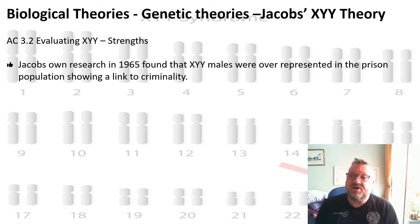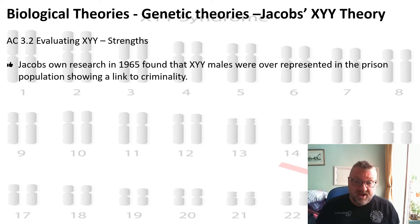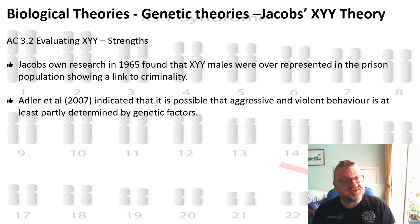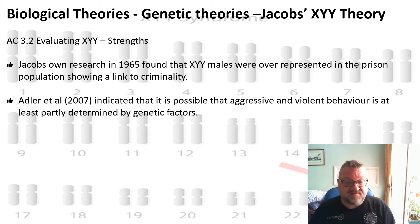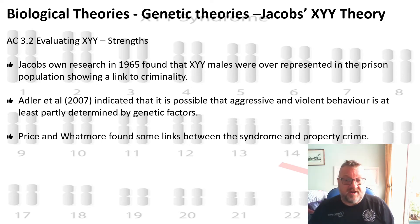Turning to evaluation, the strengths are that the 1965 research did find that XYY males were overrepresented in the prison population, showing a definite link to criminality. Adler et al. in 2007 found that aggressive and violent behaviour is at least partly determined by genetic factors, and Price and Watmore found links between the syndrome and property crime.